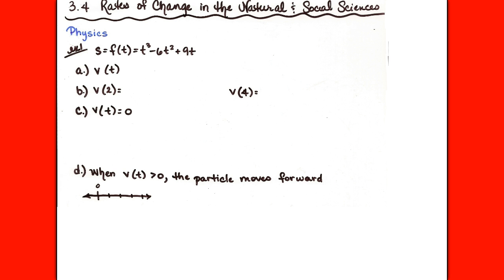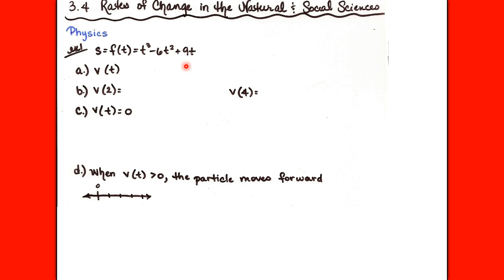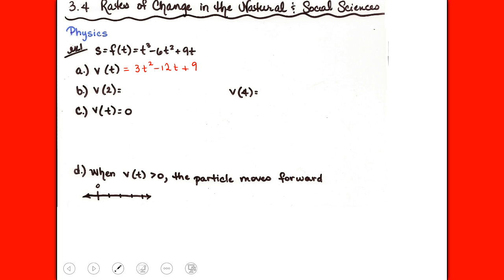Example 1: the position of a particle is given by s = f(t) = t³ − 6t² + 9t, where t is measured in seconds and s in meters. Part (a) asks us to find the velocity at time t — leaving t in there rather than plugging in a specific value. Velocity is the derivative, and using our shortcut rules we get v(t) = 3t² − 12t + 9.